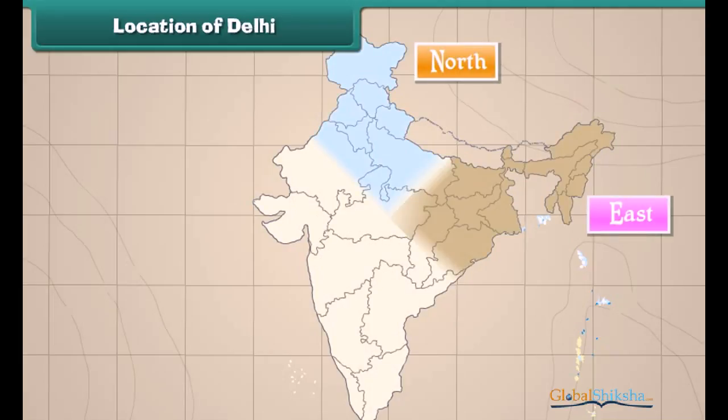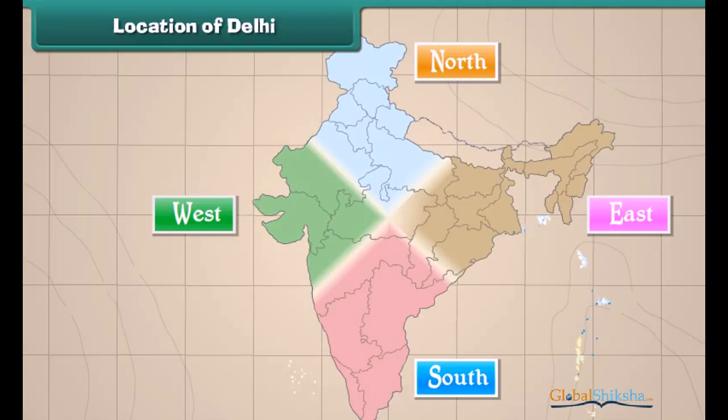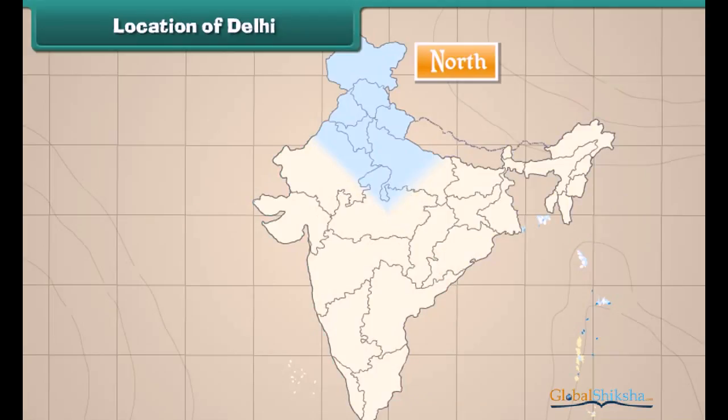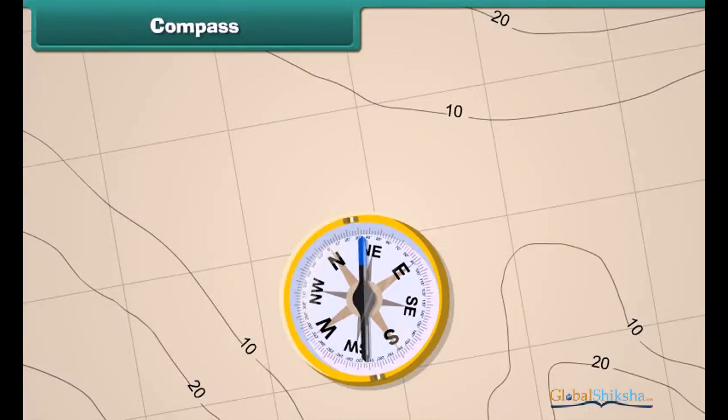Location of Delhi. This is the map of India. The four major directions, north, east, south, and west, are marked on the map.